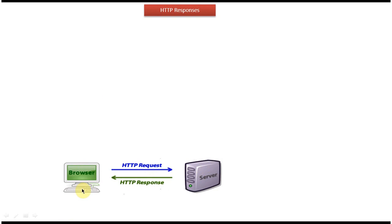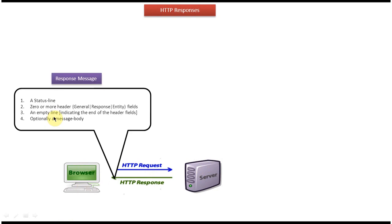Now we will see how the HTTP response message looks like. The response message has four parts. The first one is the status line. The second part is header fields, which has three types: general header, response header, and entity header. The third part is an empty line or blank line indicating the end of the header fields, and the fourth part is an optional message body.